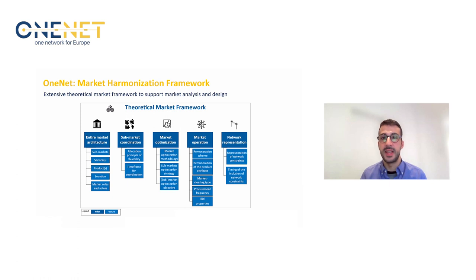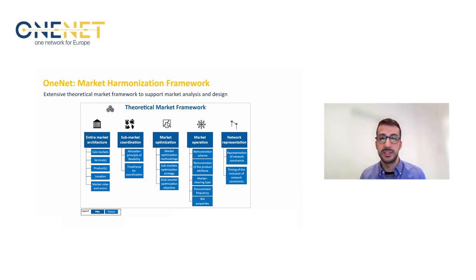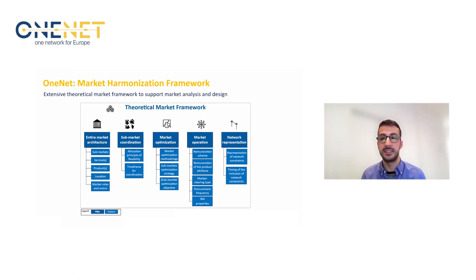Based on the analysis of the market-based coordination that defines the interactions among the actors, in the OneNet project we have proposed and developed an extensive theoretical framework that can support markets for system services analysis and design. The theoretical market framework is formed by several pillars and dimensions. These pillars are: entire market architecture, sub-market coordination, market optimization, market operation, and network representation. The first two pillars set up the entire market structure and define the coordination type, while the last three pillars describe the market-operating dimension. The theoretical market framework is a powerful market design tool, since going through each pillar and selecting the desired attribute, the system service markets are designed while considering the context requirements and the integration into the existing market architecture.